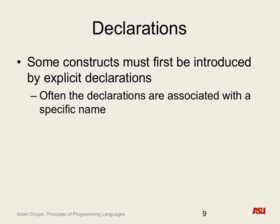Think about the design space of programming languages: what if you had a language with no names? What about no types? What about no names and no types? Think about how that affects you as a programmer writing code in that language. It's a super simple declaration — 'int i', I have an integer i — but in some languages declarations are implicit.